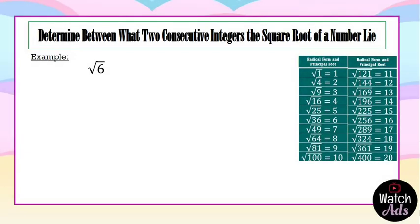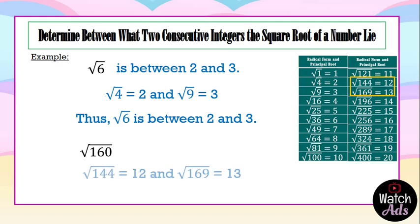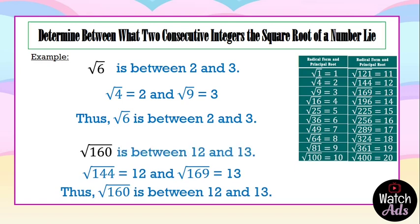Our next example is the square root of 6. I have already removed the steps since we should have them memorized. The square root of 6 is between the square root of 4 and the square root of 9. Taking their principal roots, that is 2 and 3. So the square root of 6 is between 2 and 3. Next, the square root of 160 is located between the square root of 144 and the square root of 169. Taking its principal roots, it is 12 and 13 — so the square root of 160 is between 12 and 13.